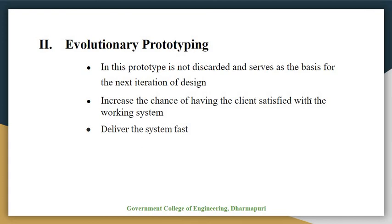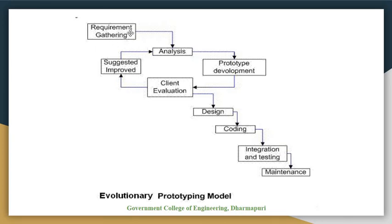We can see this with the help of a diagram. We start with requirement gathering, then analyze the requirements. Based on the analysis, we develop a prototype which is given to the client for evaluation. If it is okay based on time, the design process proceeds. If there are improvements needed, requirement analysis happens again and prototype changes are made accordingly. After designing, implementation occurs, followed by integration and testing, and then the maintenance phase. This is the evolutionary prototyping model.